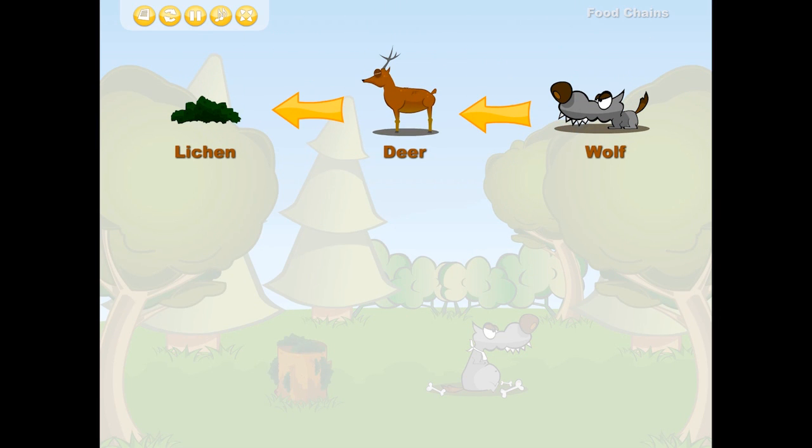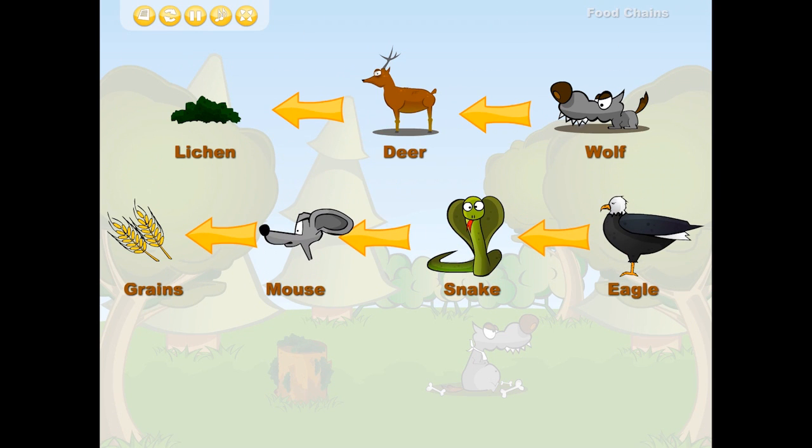Reindeer feed on lichens, whereas wolves hunt reindeer. A mouse eats grain, then a snake eats the mouse, and finally an eagle hunts the snake.